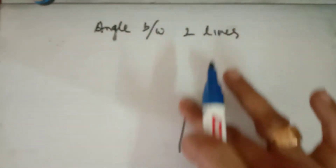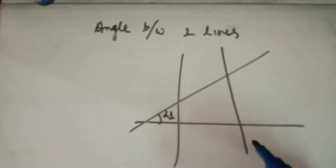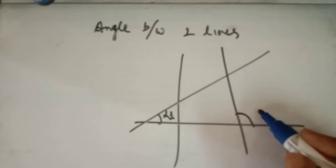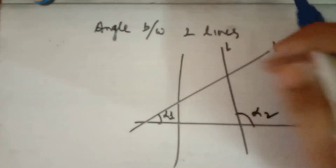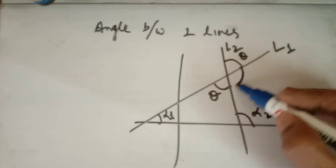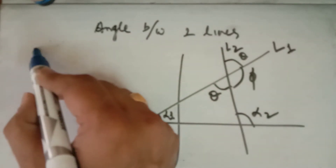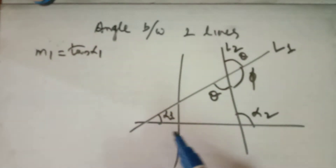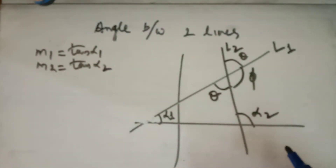Let us take two lines intersecting each other. Let the angle of inclination of one line be alpha 1 and the angle of inclination of the second line be alpha 2. This is line L1 and this is line L2, and theta is the angle between the two lines. The slope of L1 is M1 = tan(alpha 1), and the slope of L2 is M2 = tan(alpha 2), the tangent of the angle made by each line with the positive direction of the x-axis.